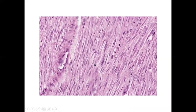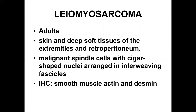This is the microscopic appearance of leiomyoma. You see the spindle-shaped cells arranged in fascicles, with no abnormal mitosis, pleomorphism, or coagulative necrosis. These three factors — nuclear pleomorphism, number of mitoses, and areas of coagulative necrosis — are used to differentiate between leiomyoma and leiomyosarcoma.